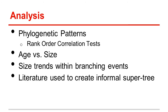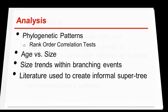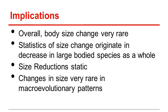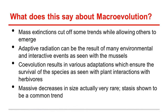Size trends were also examined within branching events using an informal supertree created by the scientist. Based on the data collected, body size changes were actually very rare. Any trends found can be explained by an overall decrease in large-bodied animals, as opposed to a decrease in size within a species. It was concluded that during most of evolutionary time, changes in size have remained static.